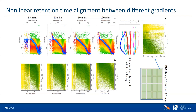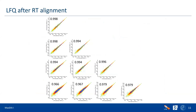Once each DIA run is aligned to the library, they can be combined in MaxLFQ even with completely different gradients. Applying MaxLFQ to this data after retention time alignment achieves very high sample-to-sample correlation between replicates. Of course, the recommendation is to keep acquisition conditions as consistent as possible — but if gradients vary for whatever reason, it is not a problem and you can still quantify them against each other.